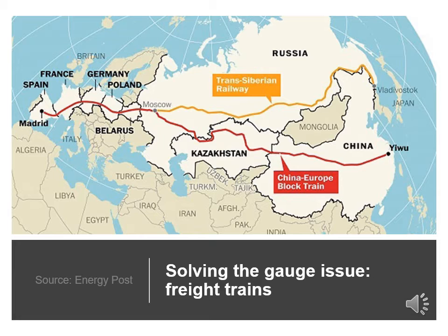With railways, a break of gauge occurs where a line of one gauge meets a line of a different gauge. Trains and rolling stock cannot run through without some form of conversion between the gauges, and freight and passengers must otherwise be trans-shipped — moved between vehicles. A break of gauge adds delays, costs and inconvenience. Trans-shipping freight from wagons of one gauge to wagons of another gauge is very labour and time intensive, and also increases the risk of goods being damaged. If the capacity of the freight cars on both systems does not match, additional inefficiencies can arise. Technical solutions to avoid trans-shipping include variable gauge axles, replacing the bogies of cars, and using transporter cars that can carry a car or wagon of a different gauge.